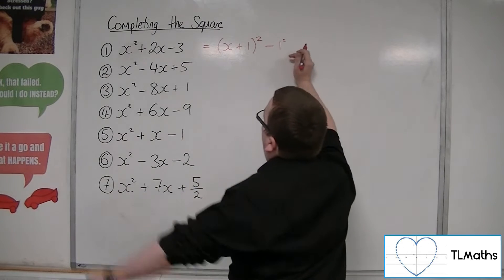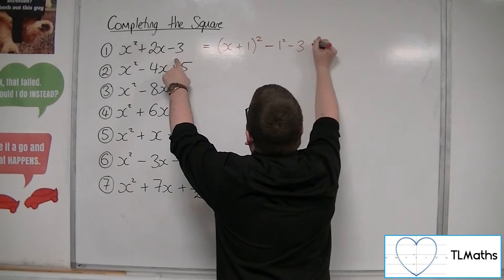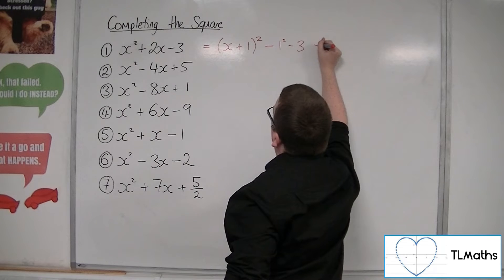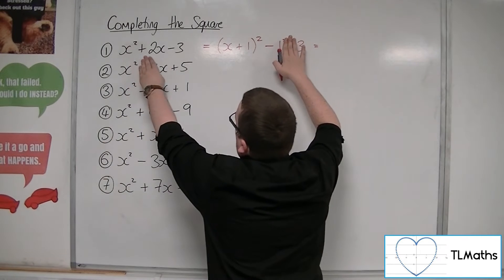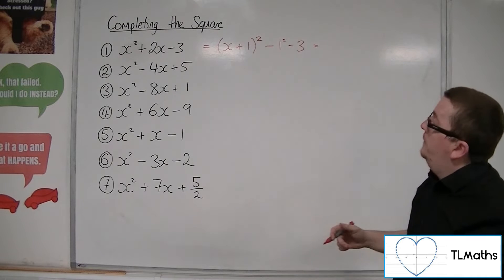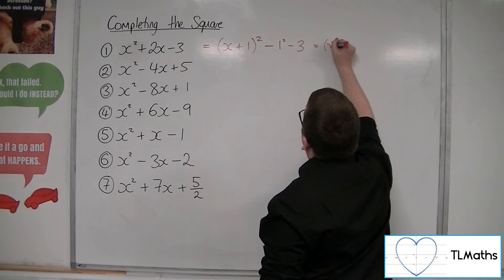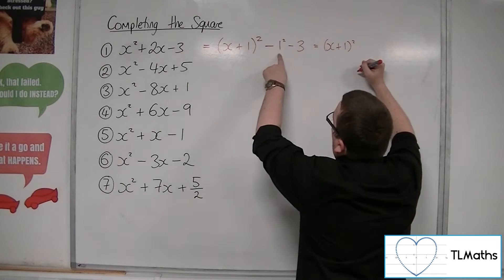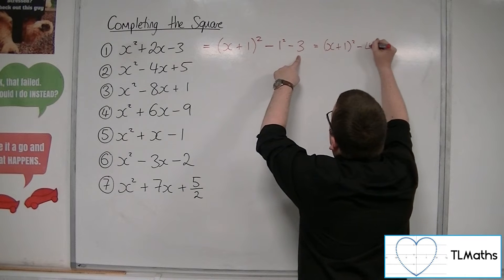We take away 1 squared and we've also got the minus 3 on the end as well. This part comes from x squared plus 2x, and then we've still got the minus 3 on the end. So we get x plus 1 squared, take away 1, take away 3, so minus 4.